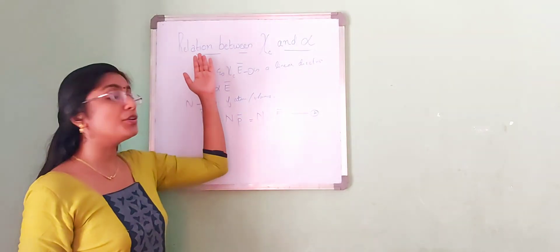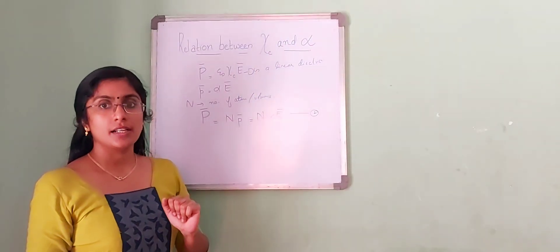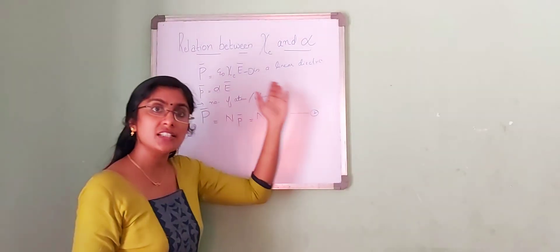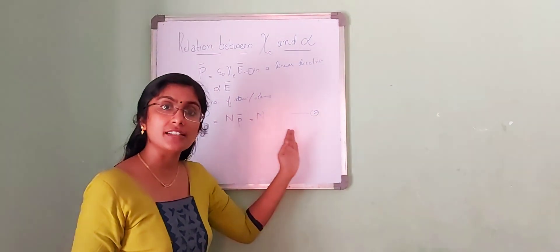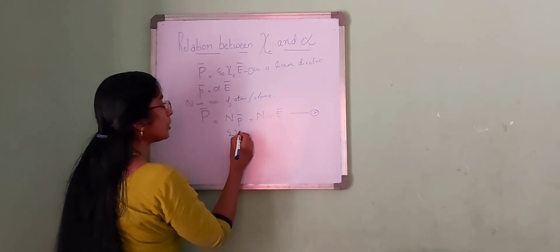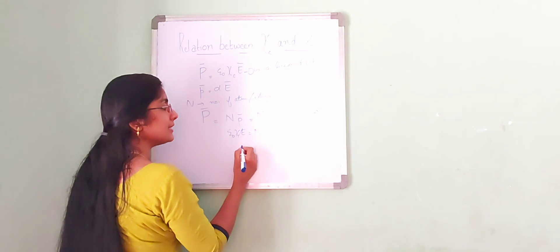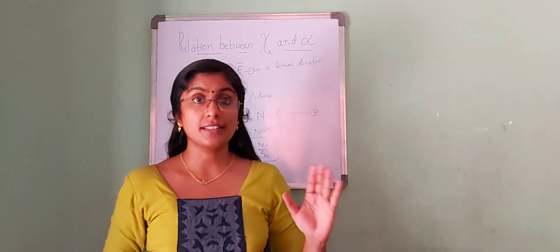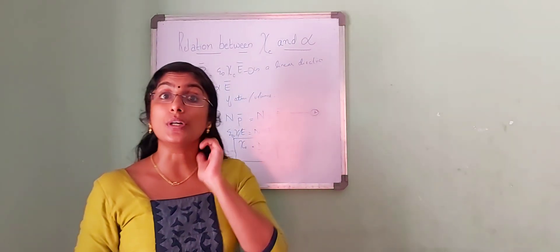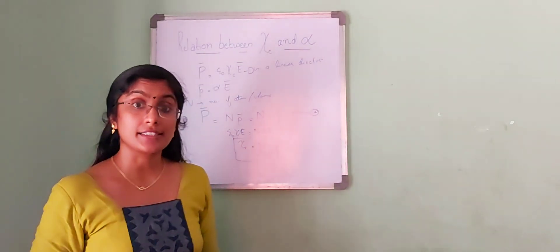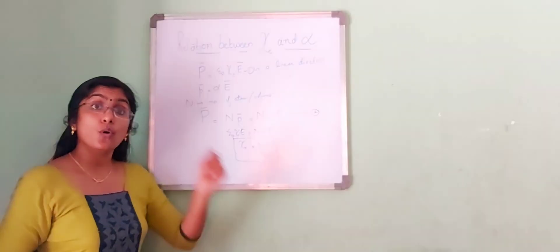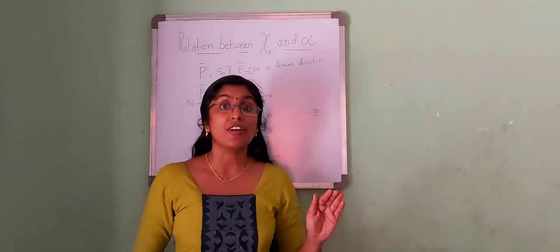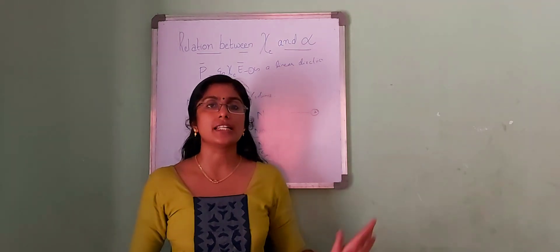What we are trying to do here is find the relation between χₑ and α. Our first inclination is to equate the two equations: ε₀χₑE = NαE, so that cancelling E we get χₑ = Nα/ε₀. However, this equation is only partially correct. It is applicable only when the number density in the dielectric medium is very, very small. In all other cases, this relation is not accurate.